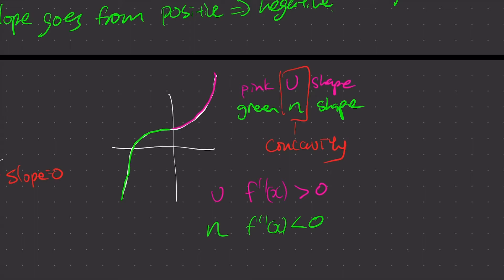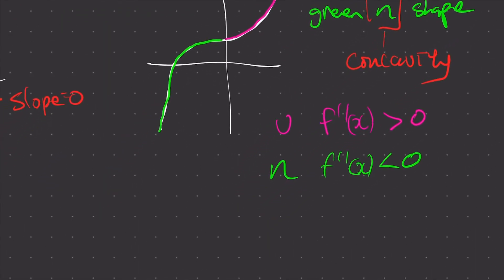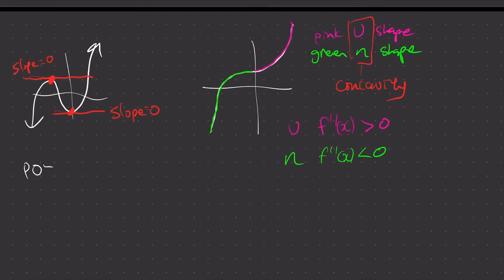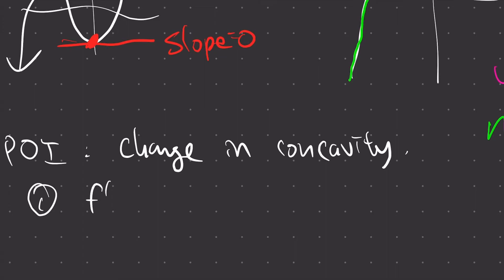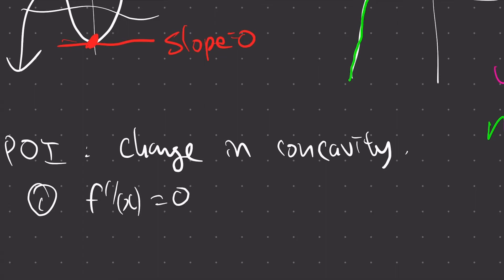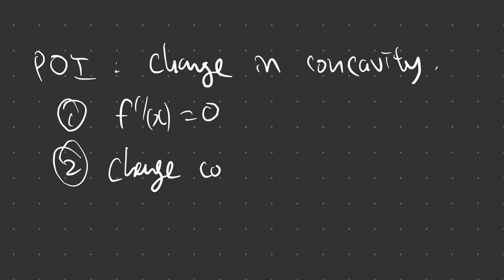Now going on to point of inflection — POI, point of inflection. A point of inflection is when you have a change in concavity. To check for a point of inflection, your second derivative must be equal to zero, and there are two conditions: you must also have a change in sign — change in concavity. So there must be a change in concavity for something to be a point of inflection.